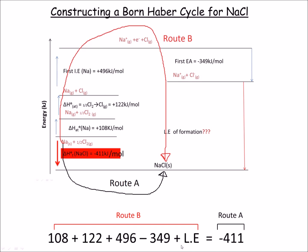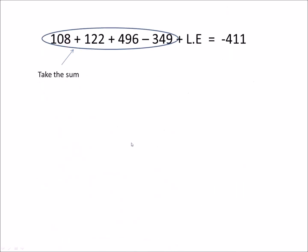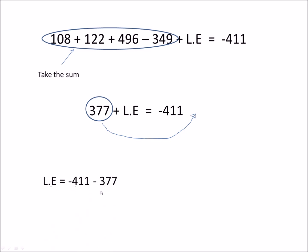Taking the sum of Route B including the unknown lattice enthalpy of formation is equivalent to Route A, which is minus 411. Summing the known values gives us 377. Moving the 377 to the right-hand side makes it negative, and subtracting gives us minus 788 kJ/mol. This is the lattice enthalpy of formation — the negative sign indicates energy is released as bonds form. If you wanted the lattice enthalpy of dissociation, you simply change the sign to give plus 788 kJ/mol.